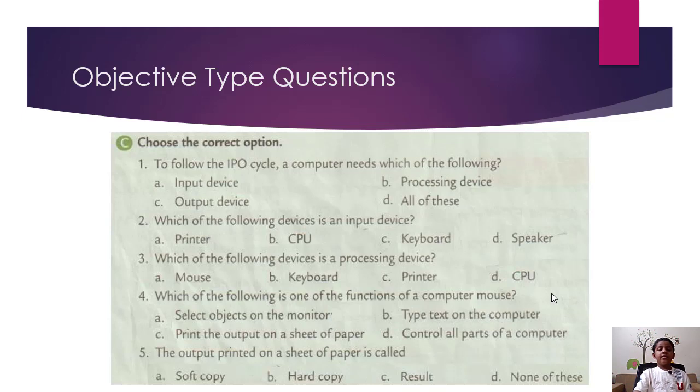First, to follow the IPO cycle, the computer needs which of the following? The computer needs input device, output device, processing device. So the answer is all of these.